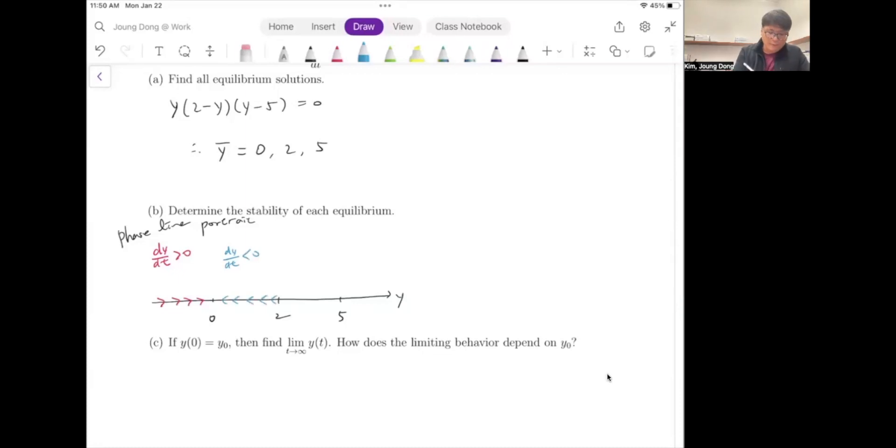Between 2 to 5, maybe 3 or 4. y is 3, positive. 2 minus 3 is the first negative. And 3 minus 5 is another negative. So we have 2 negatives, which means that it's positive. So going up direction.